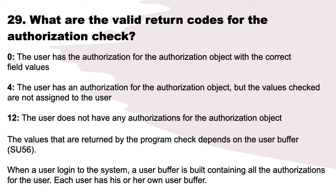What are the valid return codes for the authorization check? Return code 0: the user has the authorization for the authorization object with the correct field values. Return code 4: the user has an authorization for the authorization object, but the values checked are not assigned to the user. Return code 12: the user does not have any authorizations for the authorization object. The values returned depend on the user buffer, which is built when a user logs into the system and contains all authorizations for that user.